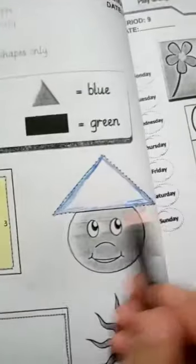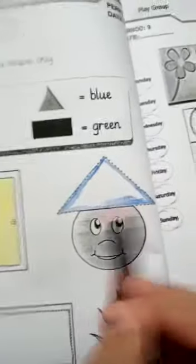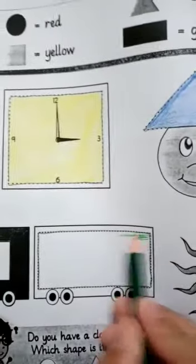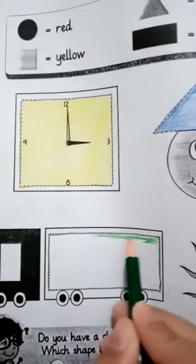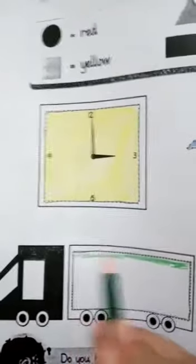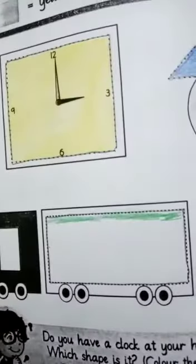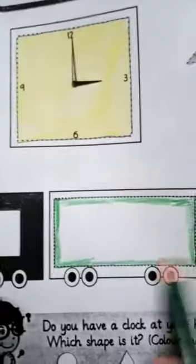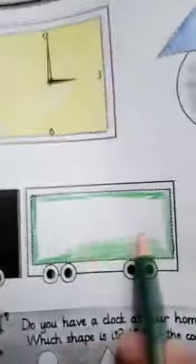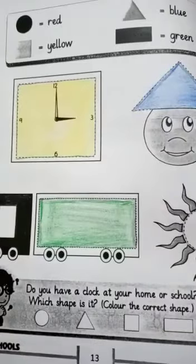Now we will do the rectangle and we will do the green color. We will do the outline first and then we will color. Now we will color in the rectangle.